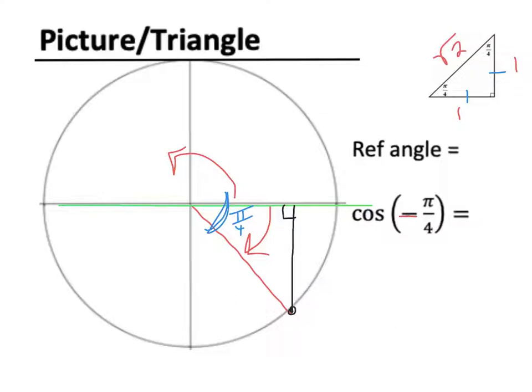So this side is going to be what? 1. And this side is also going to be 1. But don't forget, we're going down. So it's negative 1. And then the hypotenuse, as we saw up here, is root 2. So now we have our 1, negative 1, root 2.